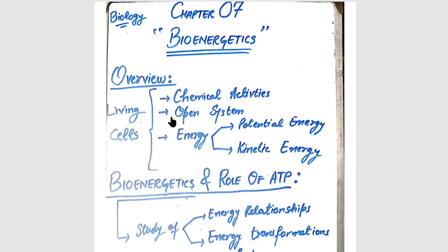We all know that living cells have chemical reactions involved with the environment. Living organisms are open systems — every time some substances enter and exit the cell. Substances that are in surplus exit, and substances that enter the cell are broken down. New substances begin to form. The breaking of substances and the formation of new ones requires energy.